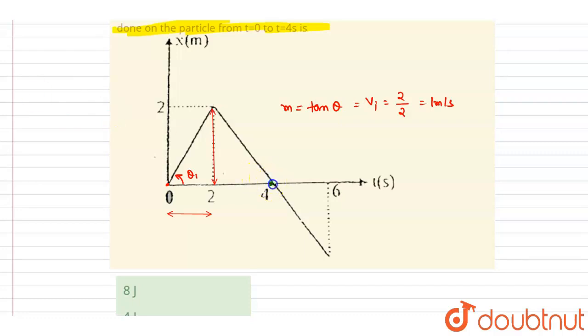Now if you see at point t equals four, again this height is two meters only, but this time this angle is obtuse. This theta two is obtuse, so I will write down m dash. It is tan theta dash, so it will be equals to v final. It is minus two by two.